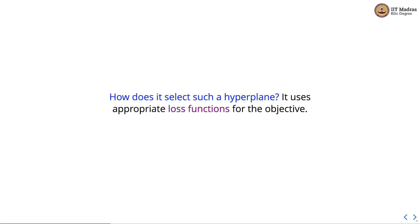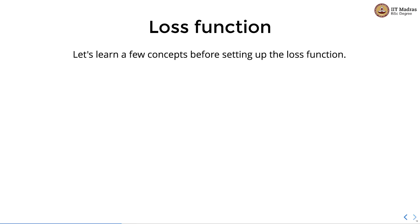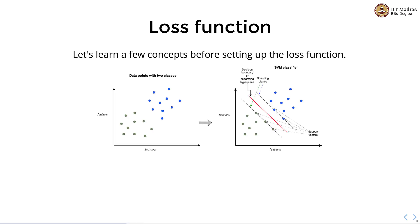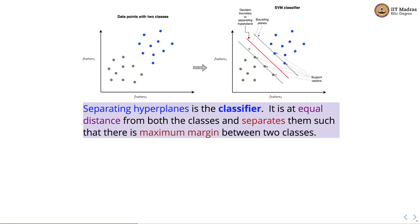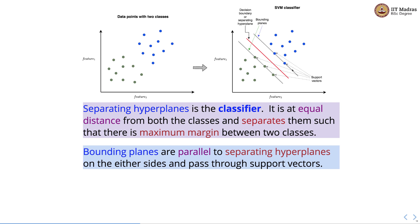How does SVM select such a hyperplane? It uses an appropriate loss function for the objective. Before setting up the loss function, let's learn a few concepts. There are three components: a separating hyperplane, two bounding planes, and points called support vectors. The separating hyperplane is the classifier — it is at equal distance from both classes and separates them such that there is a maximum margin between the two classes. The distance between the two bounding planes is called the margin. Bounding planes are parallel to the separating hyperplane, on either side, and they pass through the support vectors.